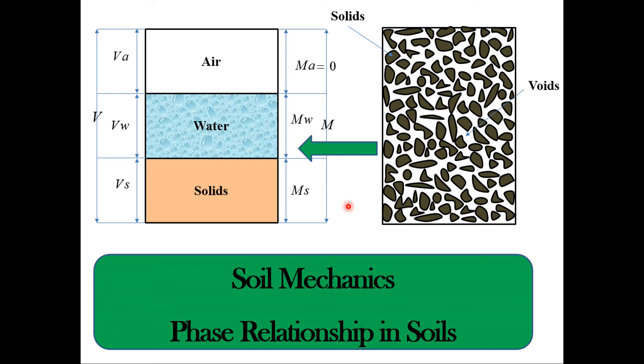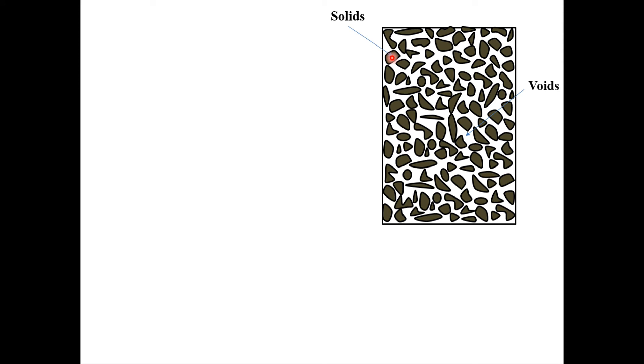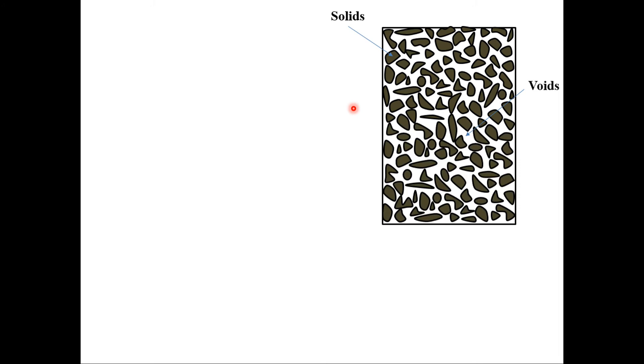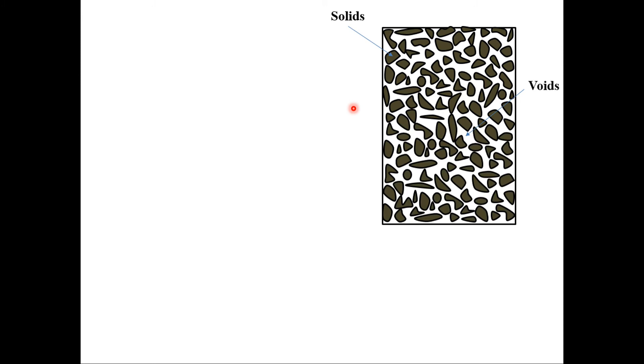Hello guys, welcome back to this channel. Today's video will be on phase relationships in soils. A soil mass is made up of solid particles called solids, and empty space between solid particles which are called voids. These voids can be filled with water or with air. If the voids are filled with water, the soil mass is known as saturated, and if filled with air, it is called unsaturated.